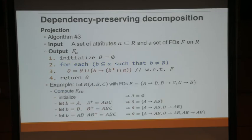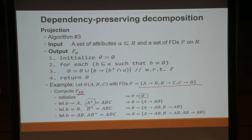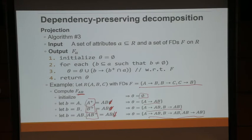So why do we want dependency-preserving decomposition? Because of projection: projection gives you each individual table, and you can only enforce an FD if it's either a primary key or a candidate key. Because of this, you cannot enforce FDs that cross tables. But the question is: do you even need to enforce that directly? Can you imply it instead? That's what dependency-preserving decomposition gives us — without actually enforcing FDs that cross the boundary, we can still enforce those FDs by only enforcing the FDs that appear in the fragments.